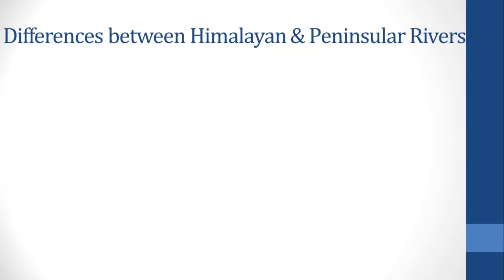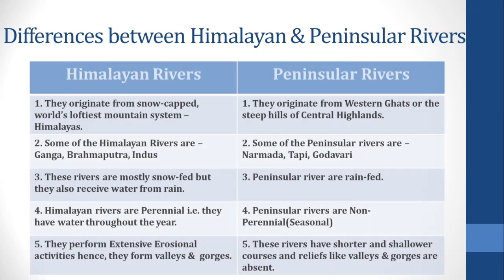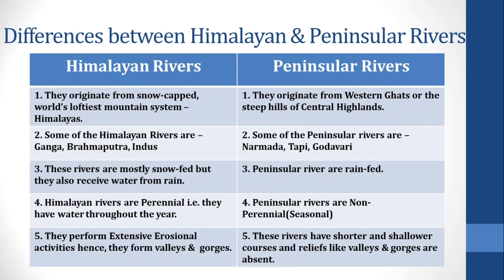Now, let's look at the differences between Himalayan rivers and Peninsular rivers. Point 1 — Himalayan rivers originate from the snow-capped, world's loftiest mountain system, the Himalayas. Peninsular rivers originate from the Western Ghats or the steep hills of the central highlands.